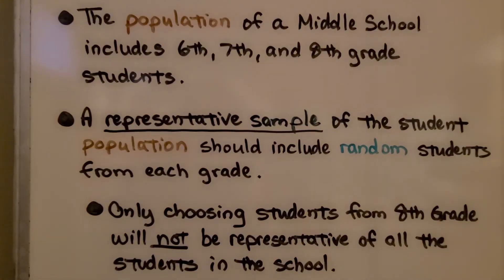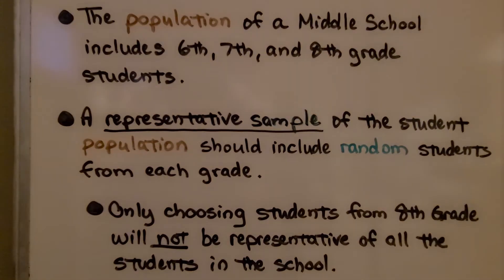The population of a middle school includes 6th, 7th, and 8th grade students. A representative sample of the student population should include random students from each grade. Only choosing students from 8th grade will not be representative of all the students in the school.